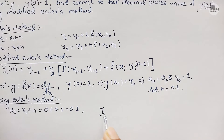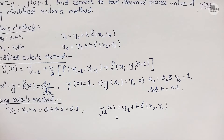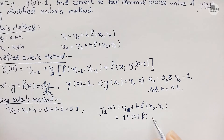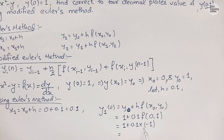Our first step, similar to Euler's method, is to compute the initial predictor: y1^(0) = y₀ + h·f(x₀, y₀) = 1 + 0.1·f(0, 1). Substituting into f(x,y) = x² − y: f(0,1) = 0² − 1 = −1. So y1^(0) = 1 + 0.1·(−1) = 0.9.